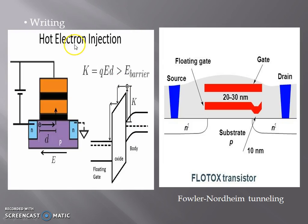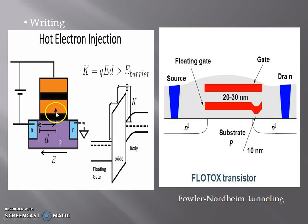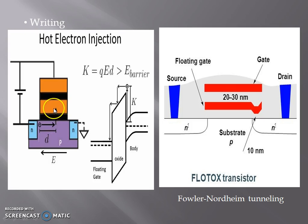In hot electron injection, we give a high source-to-drain voltage, therefore the electrons are accelerated and gain kinetic energy. When this kinetic energy becomes greater than the barrier potential, the electrons cross the barrier and enter the floating gate. For the motion of electrons in this direction, there should be an electric field, which is set up by the gate-to-source voltage. Due to the electric field, the electrons are pushed from the channel into the floating gate and are trapped there.